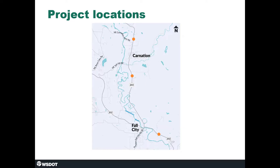Now we'll show you where this work is going to occur. The orange dot at the top is on SR203 just north of Northeast Carnation Farm Road, carrying an unnamed tributary to Horseshoe Lake. The dot in the middle on SR203 south of Carnation is an unnamed tributary to the Snoqualmie River near 324th Way Northeast. On SR202, southeast of Fall City, there are two culverts: one carries Skunk Creek and the other carries an unnamed tributary to Skunk Creek.